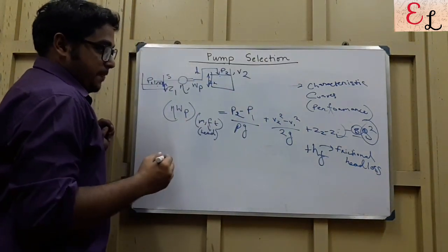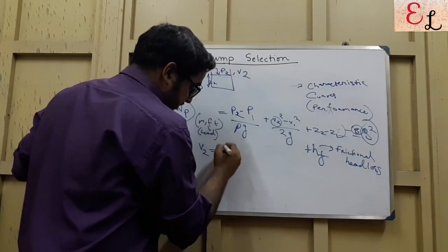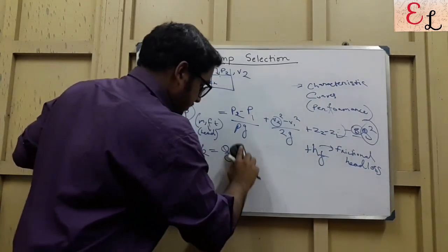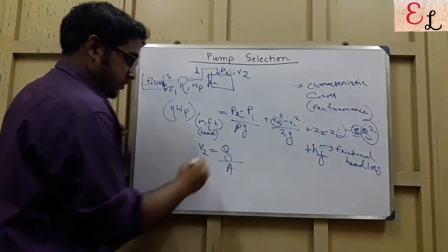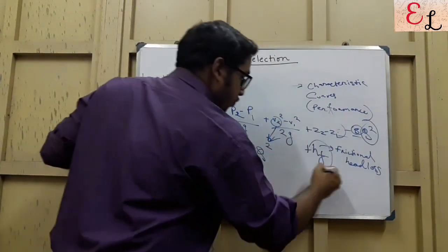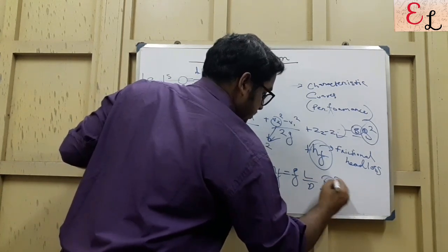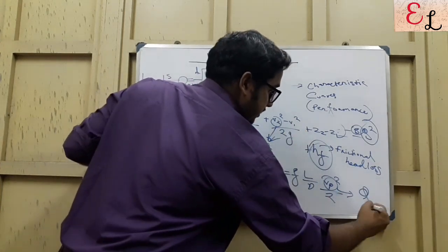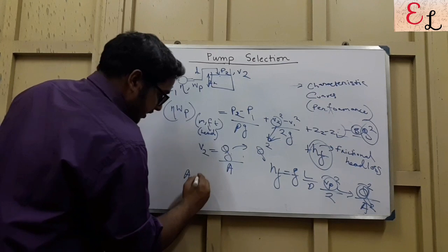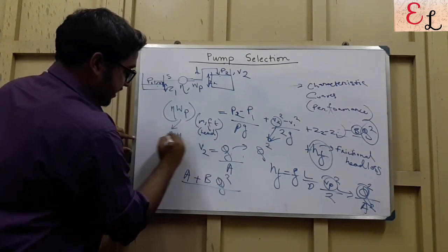So this is the equation. You can see that this V2 square, V2 we know is the velocity, it is volumetric flow rate divided by the area. This volumetric flow rate depends on the square of the volumetric flow rate. Moreover, HF also has an expression of F del by D, V square by 2, and it is also dependent on Q. So you see, there is an overall dependency of A plus BQ square. This can be also represented as delta H, head developed by the pump.